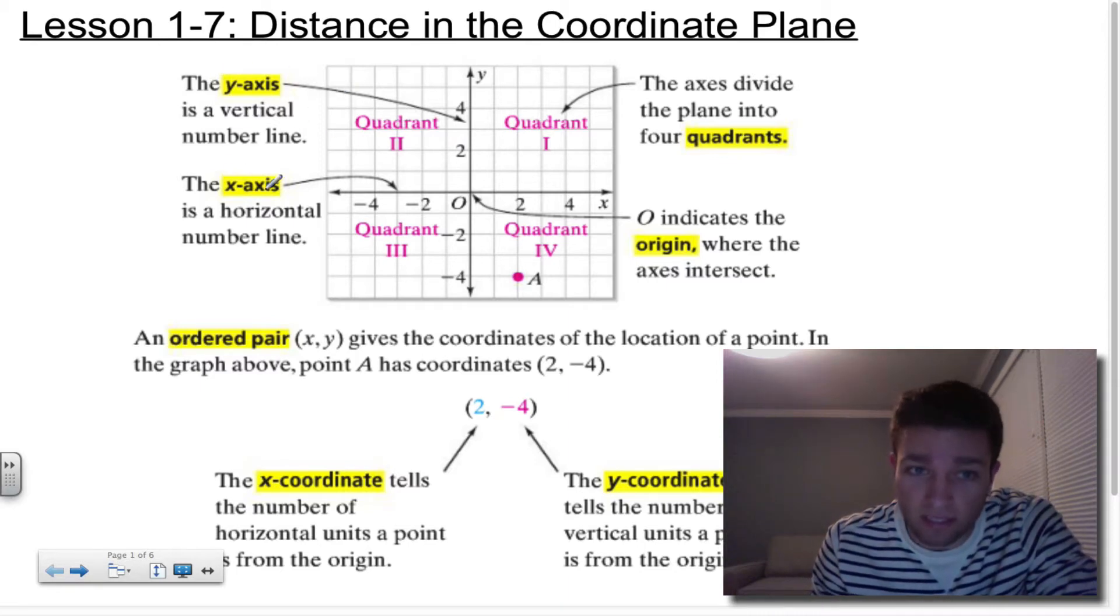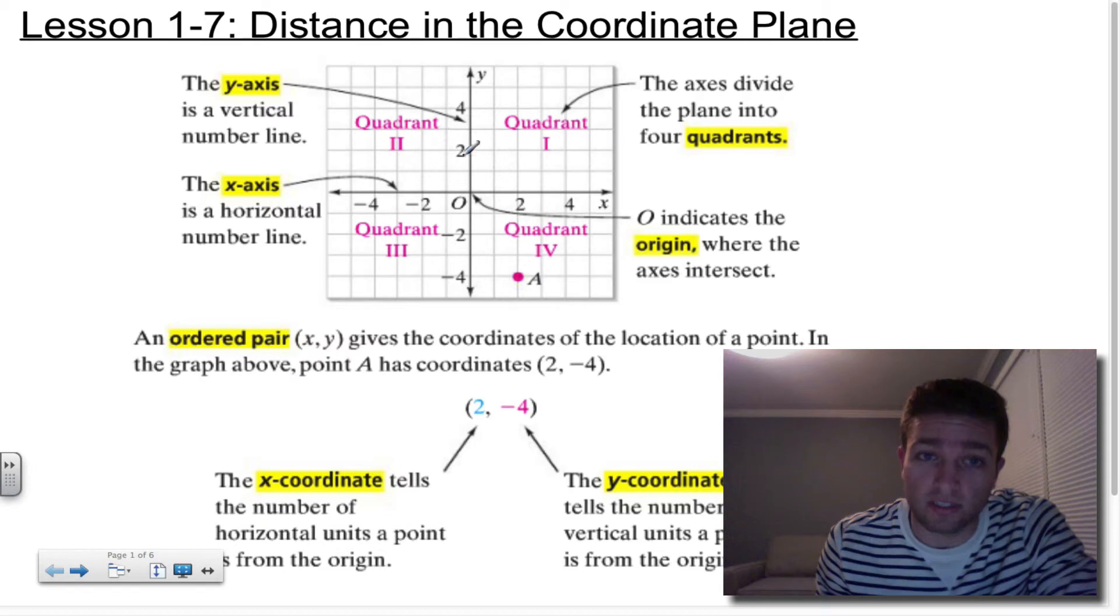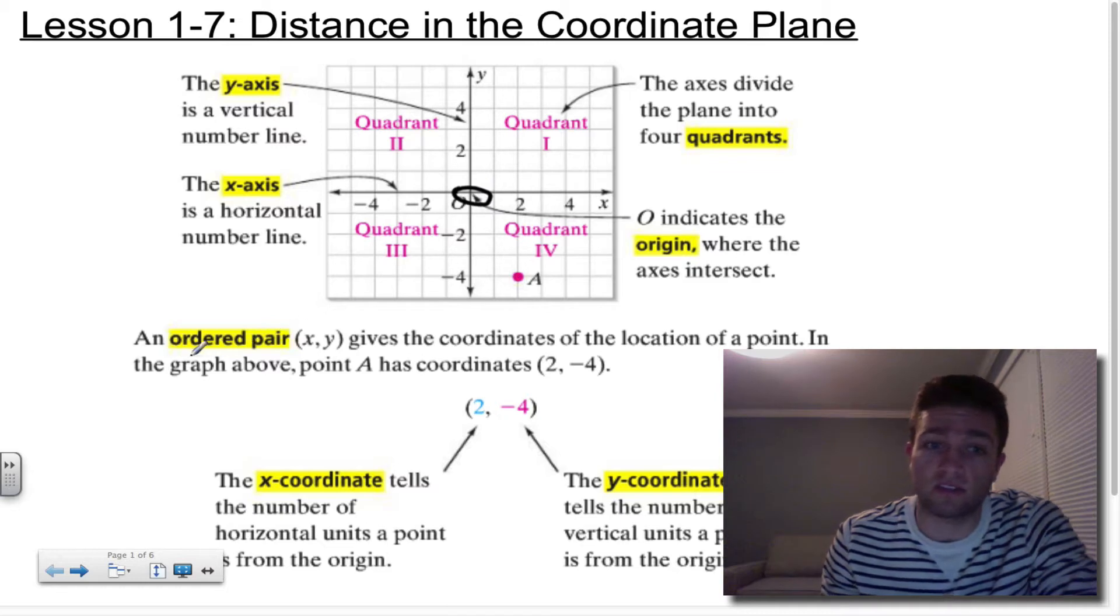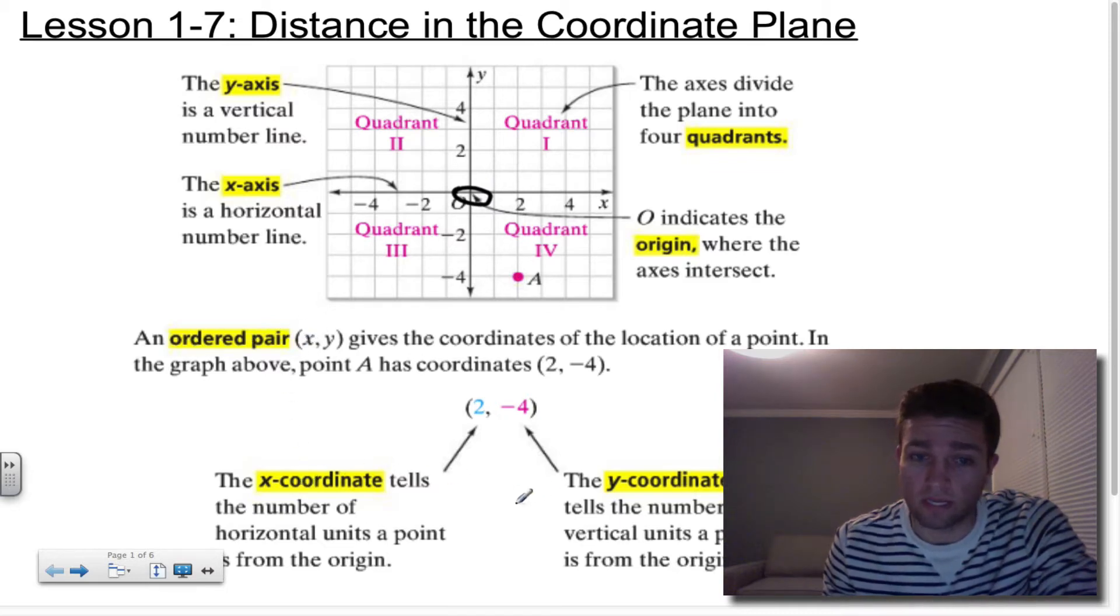But this is basic stuff. Do you know what a y-axis, x-axis is? Do you know which quadrant is quadrant 1, 2, 3, and 4? Do you know where the origin is? We've talked about all these things. What is an ordered pair? What's an x-coordinate? What's a y-coordinate?